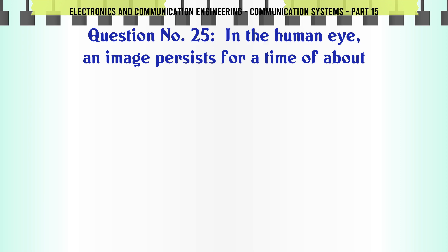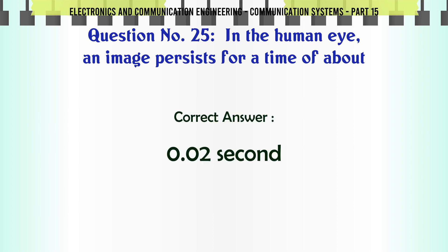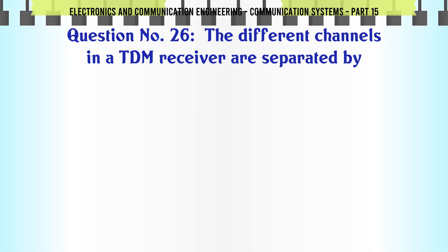In the human eye an image persists for a time of about: A 1 second, B 0.1 second, C 0.05 second, D 0.02 second. The correct answer is 0.02 second.